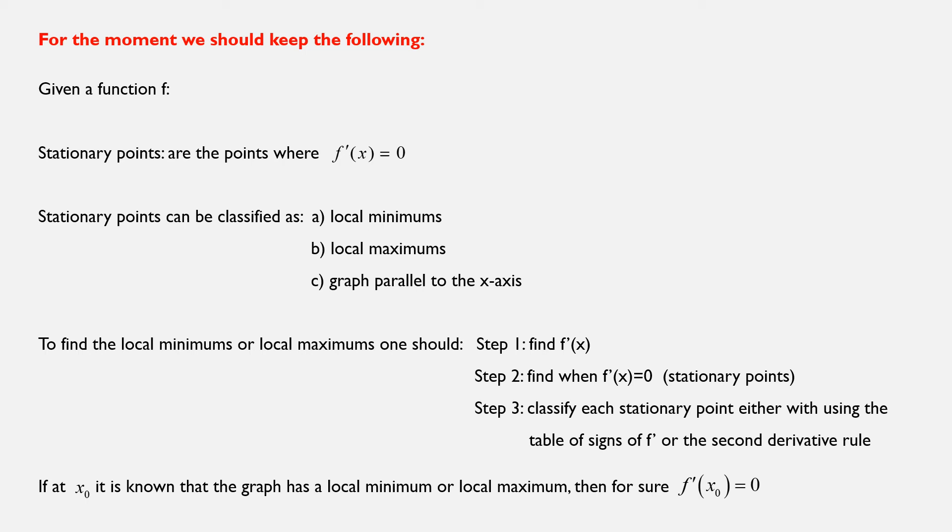Then, we need to know that stationary points can be classified either as local minimums or local maximums, or none of the above, just some points where the graph is parallel to the x-axis. Now, in order to find the local minimums or local maximums, one should follow the steps below.